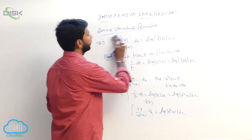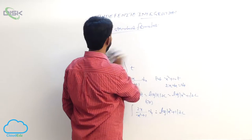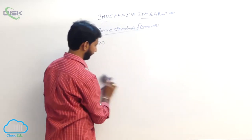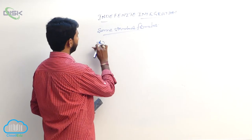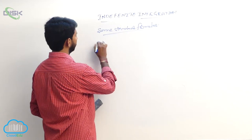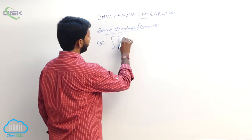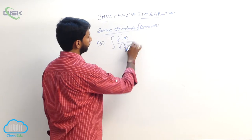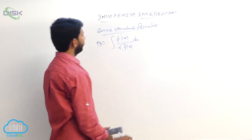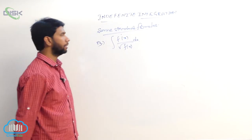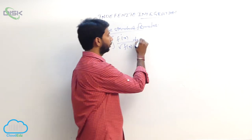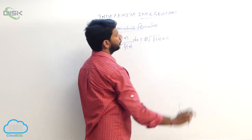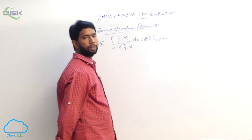The third standard formula: integral of f'(x)/√(f(x)) dx equals 2√(f(x)) plus constant.